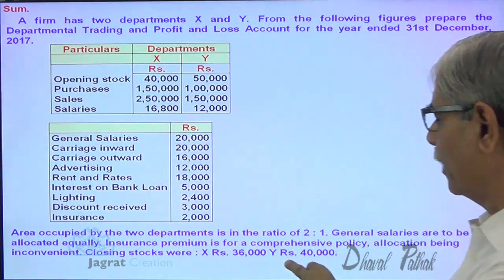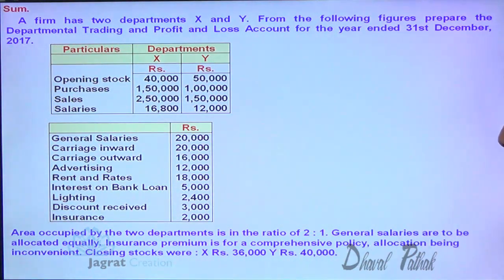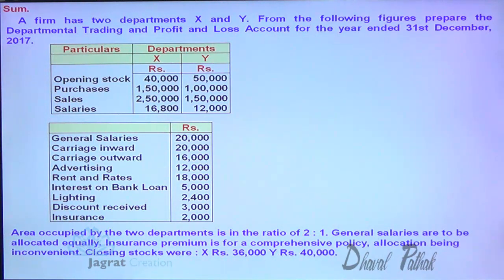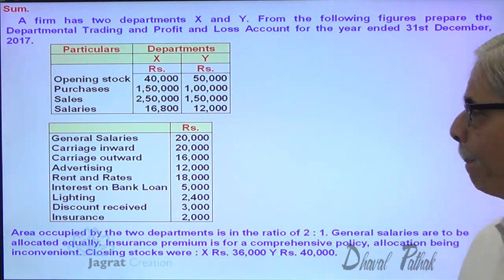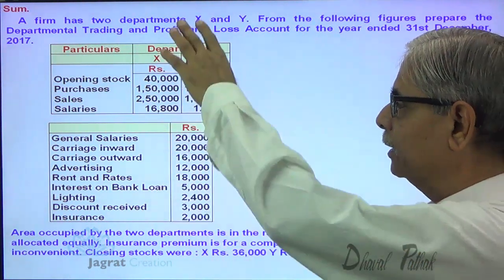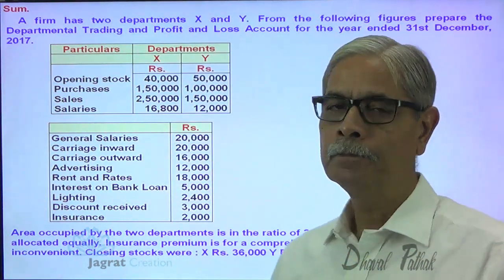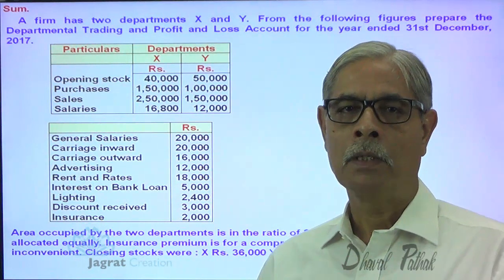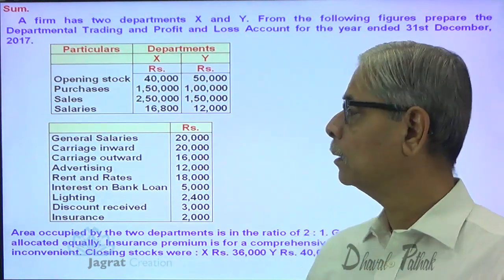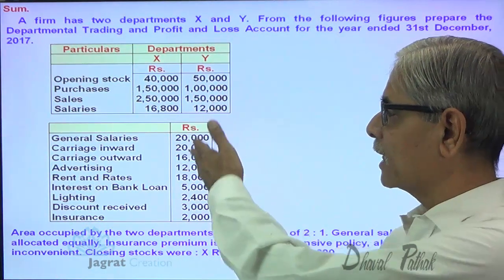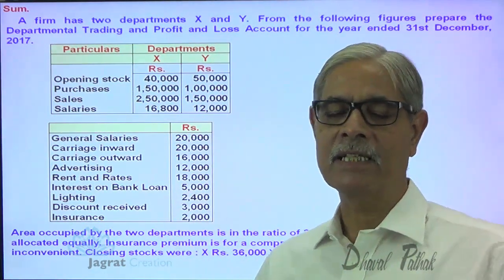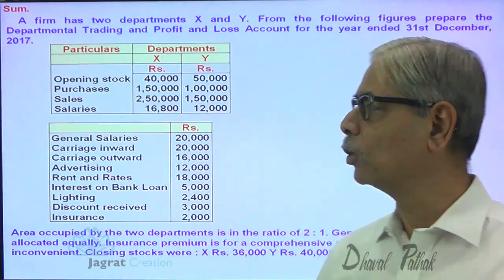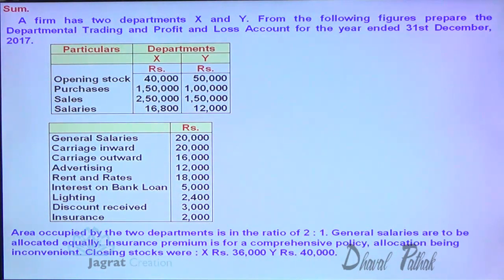Closing stock of X and Y: 30,000 and 40,000. Now, let me prepare a working note for the bifurcation of common expenses.